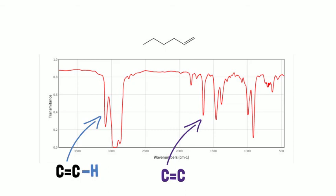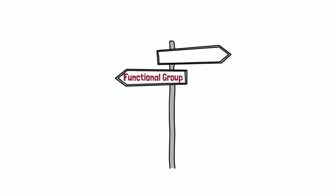A few points to remember. IR does not tell us the precise structure. It tells us about functional groups only. How is this useful? Well, let's say you have a molecule and you know its formula is C3H6O. IR helps to determine what kind of oxygen this is.